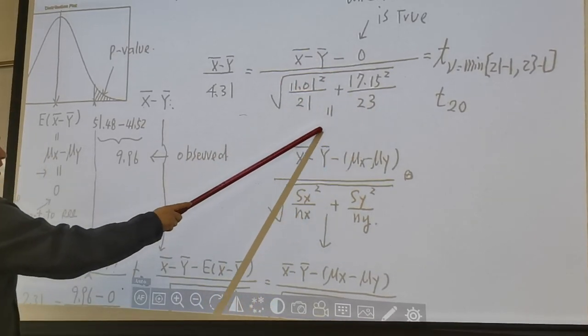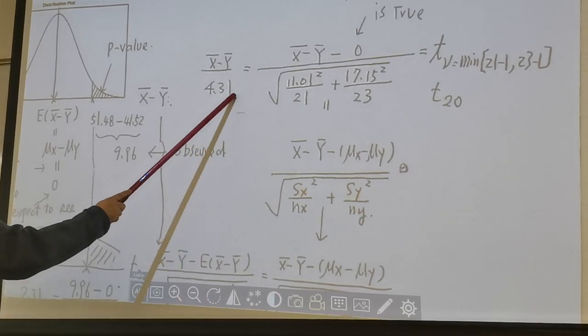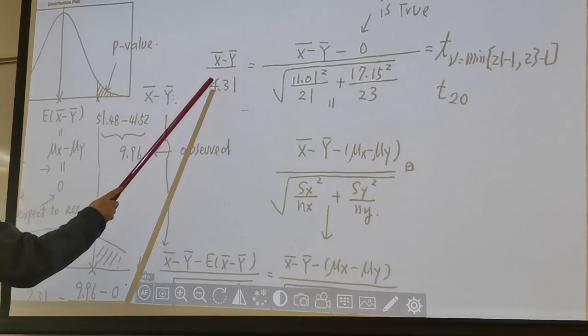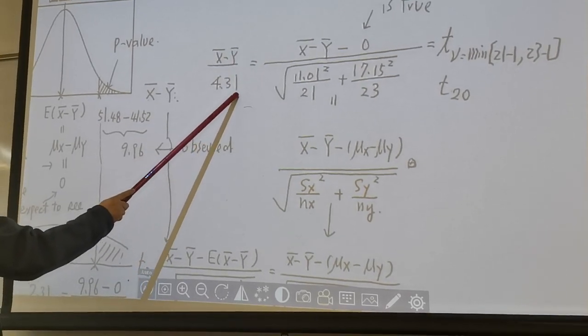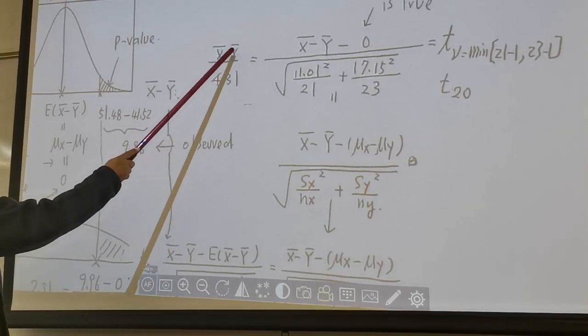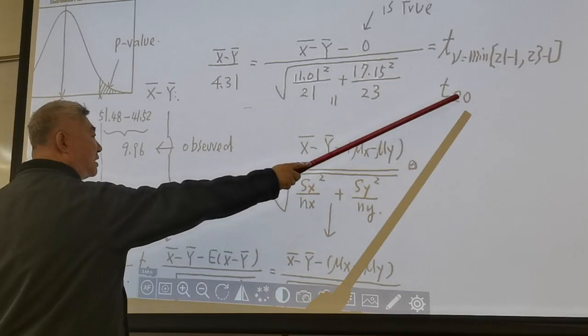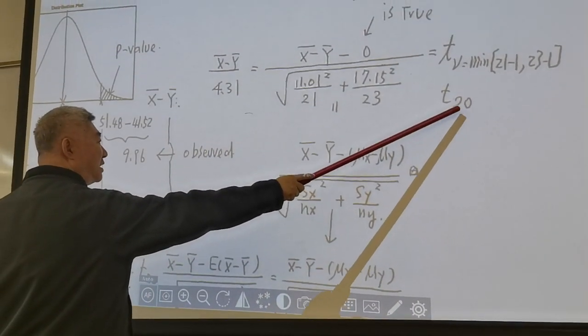And if you simplify the calculation, you find this term is 4.31. So we say x-bar minus y-bar divided by 4.31. We're going to convert the raw score, x-bar minus y-bar to a t-score. And this t is 20 degrees of freedom, approximately.